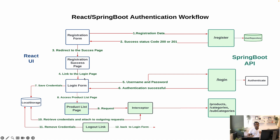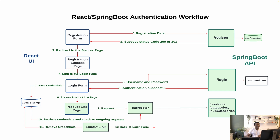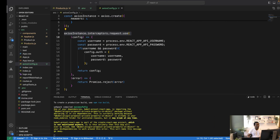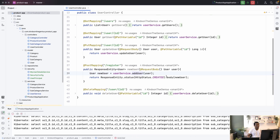At step four, once the user registers, you don't log them in immediately — you redirect them to the login page by giving them a link. They can then enter their username and password to log in. In later tutorials, we'll implement user verification via email and SMS, but for now let's keep it simple. At step five, the user enters their username and password and submits, which sends it to the login endpoint.